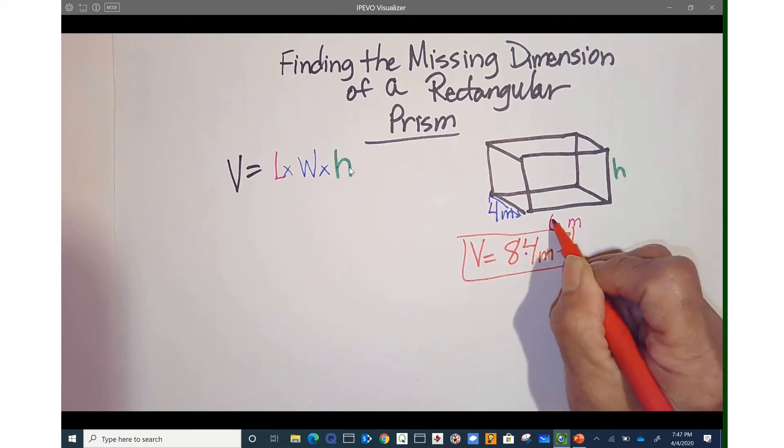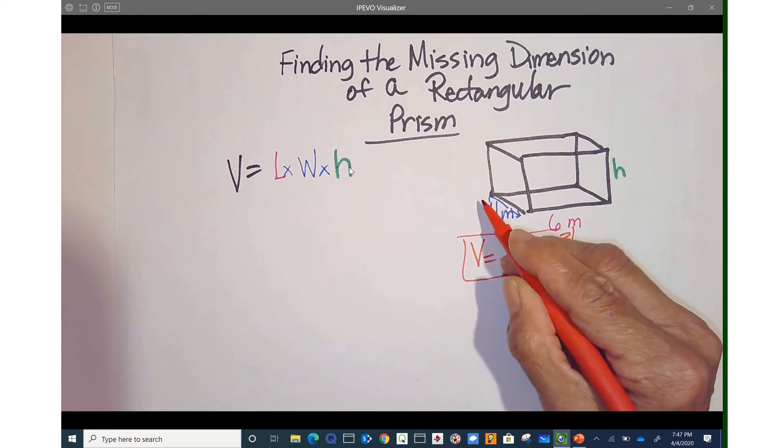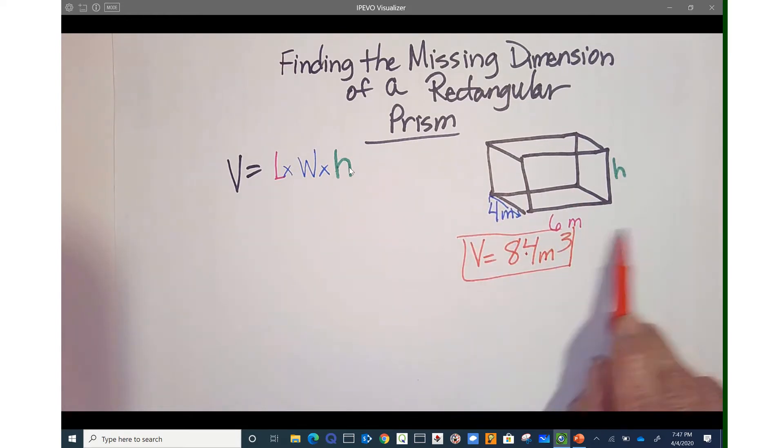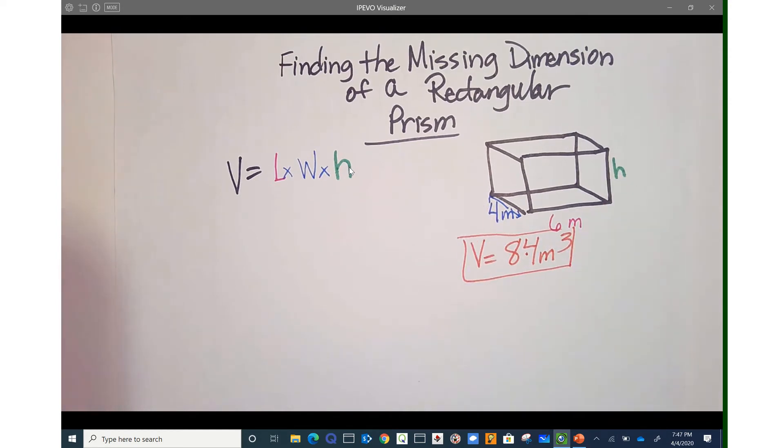This right here is considered my length. This is my width, or they could both be bases, but we're using LWH. So it's my length, my width, and the height is what we're looking for.